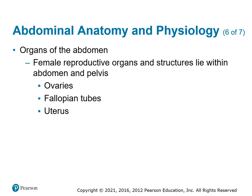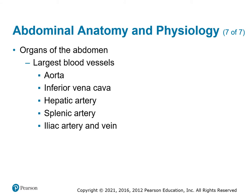Female reproductive organs — the ovaries, fallopian tubes, and uterus — reside down in the abdominal cavity and lower quadrants. Then you've got the large blood vessels: the aorta coming off the heart, with the ascending and descending aorta — the descending goes through the abdominal cavity. You also have the inferior vena cava returning blood to the heart, the hepatic artery going to the liver, the splenic artery going to the spleen, and the iliac artery and vein going down through the pelvis.